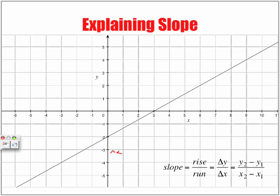Explaining slope. Slope is equal to rise over run, represented by delta y over delta x — the change in y over the change in x. When picking two random points on a line, make sure you pick points that lie exactly at the grid marks, right in the corner of the grid marks. Points that fall between grid marks will give you fractions or decimals, so we look for clean intersections along the line.